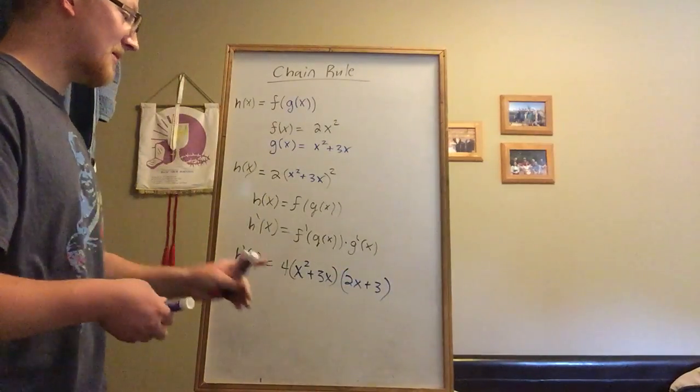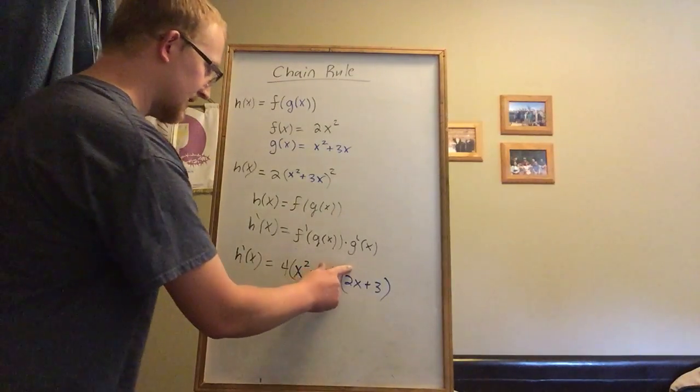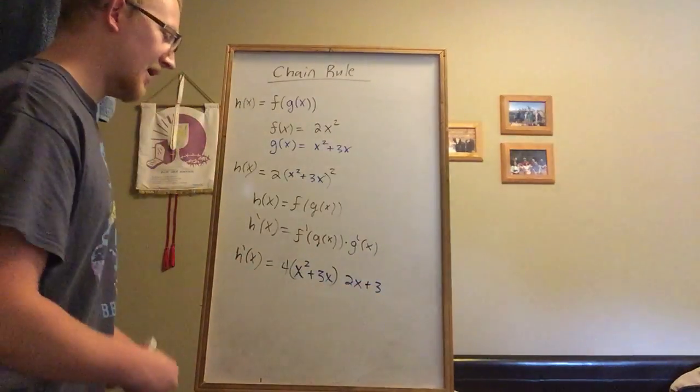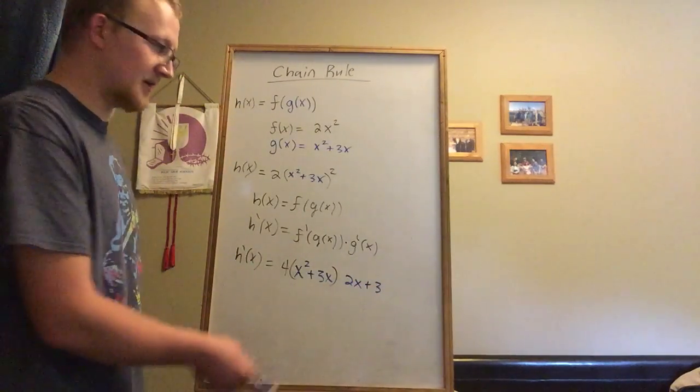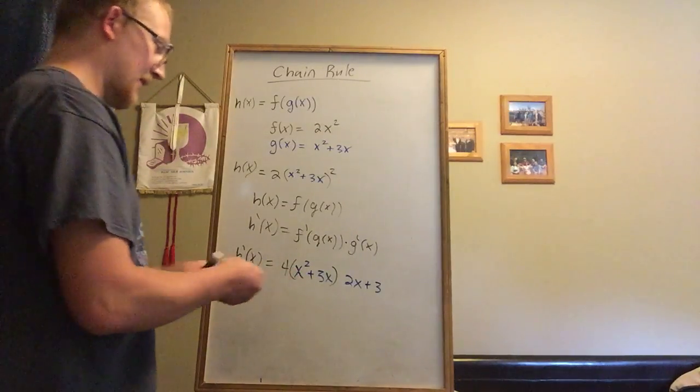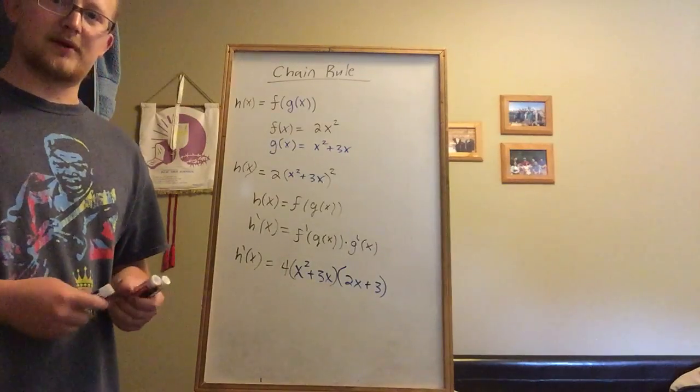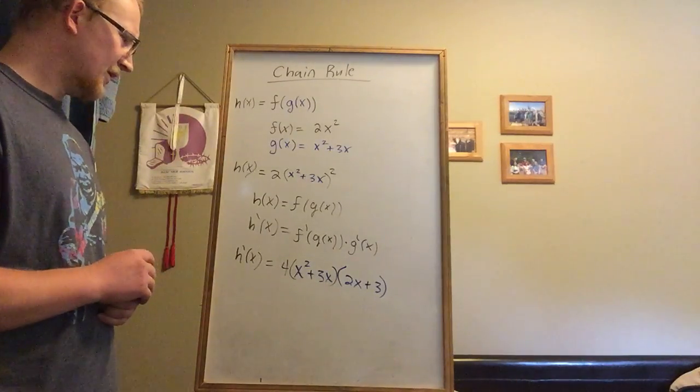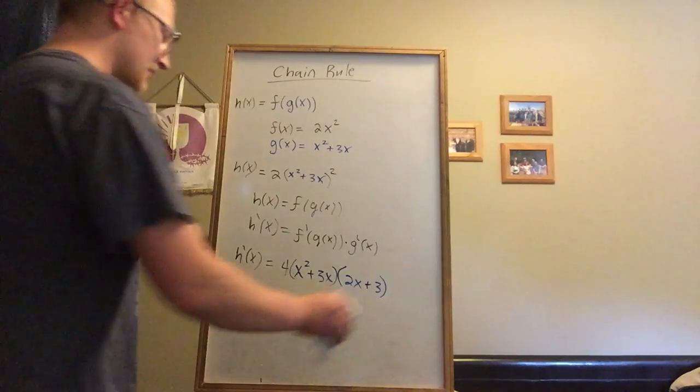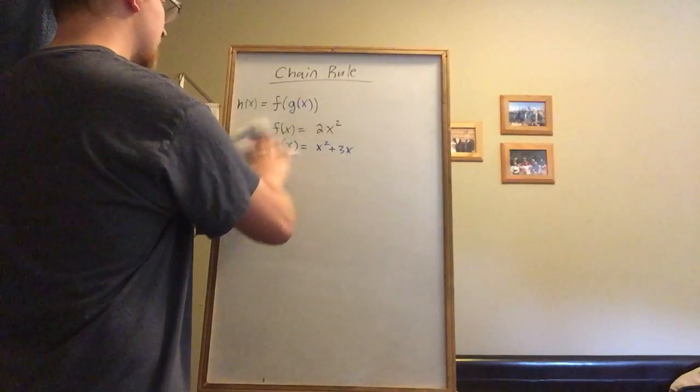Remember to keep these functions in brackets. If I wrote this without brackets or parentheses, it might appear as though the 3 wasn't part of the multiplication. But it is according to the chain rule, so it's important to keep your parentheses. That is the chain rule in a nutshell - it's used for functions within a function.